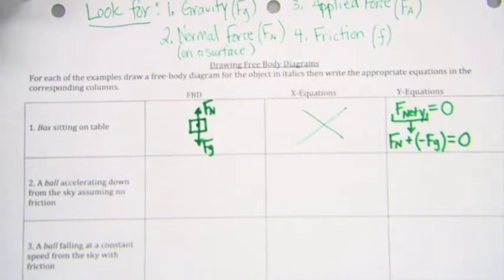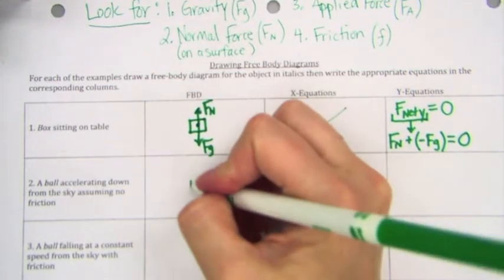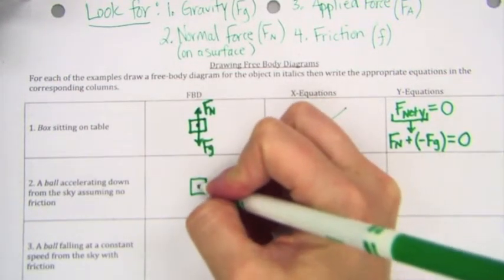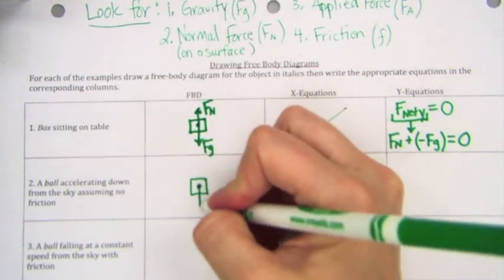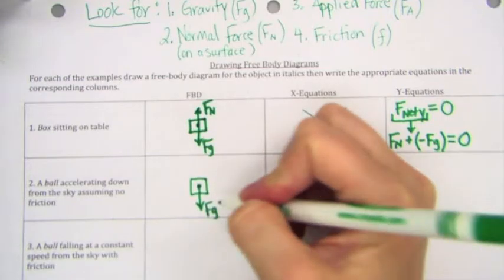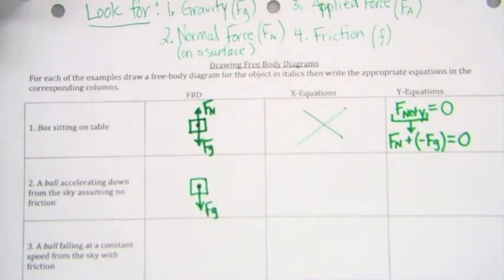A ball is accelerating down from the sky, assuming no friction. So I have my object. It's falling. So does it have gravity? Yes. Is it on a surface? No. It's falling in the sky. It cannot touch a surface. So therefore, it does not have the normal force. There is no friction, and there is no applied force. That's it. That's the only thing acting on the object.